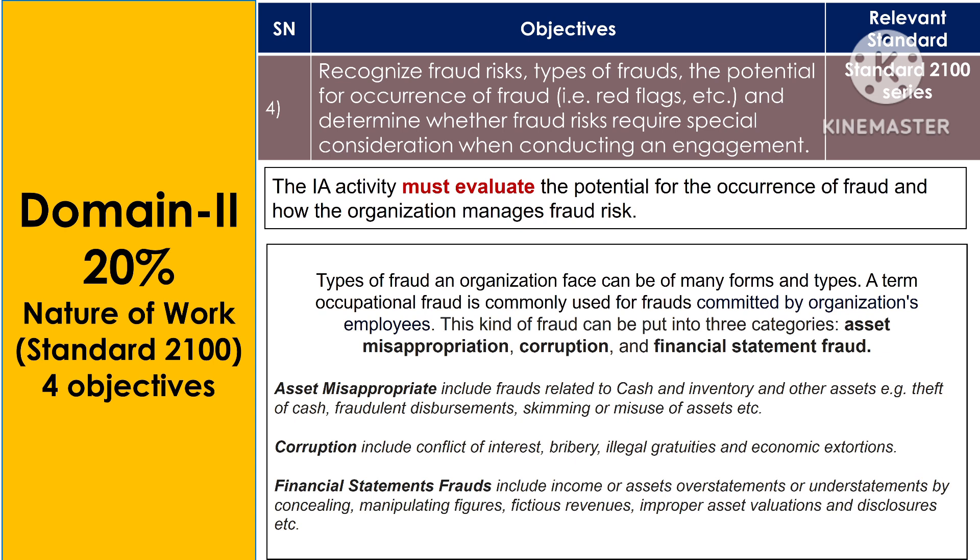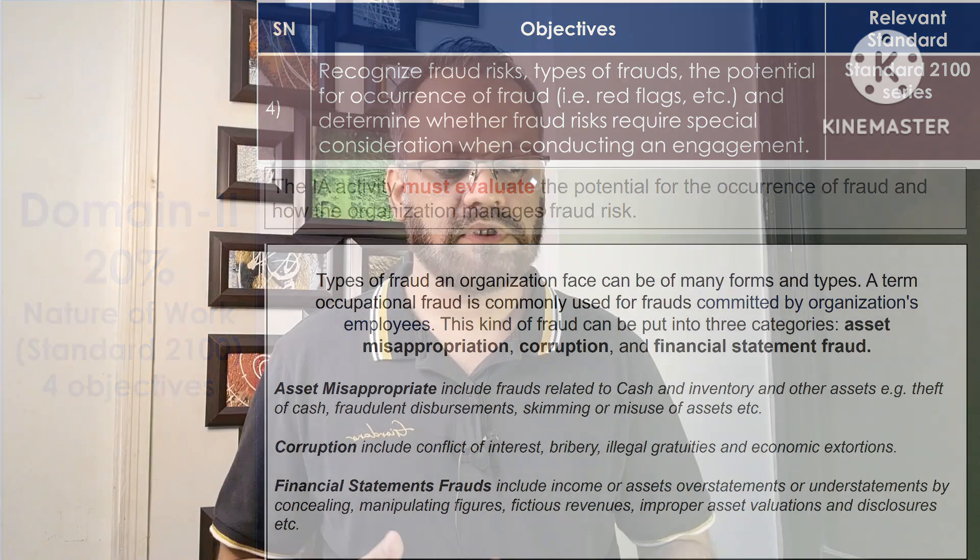The types of fraud an organization faces can take many forms. The term occupational fraud is generally used for frauds committed by an organization's employees — also called white-collar crimes. These fall into three categories: asset misappropriation, corruption, and financial statement fraud. Asset misappropriation includes frauds related to cash, inventory, and other assets — such as theft of cash or fraudulent disbursements. Corruption includes conflict of interest, bribery, illegal gratuities, and economic extortion. Financial statement fraud includes overstating or understating income or assets by concealing or manipulating figures, fictitious revenues, and improper asset valuations.